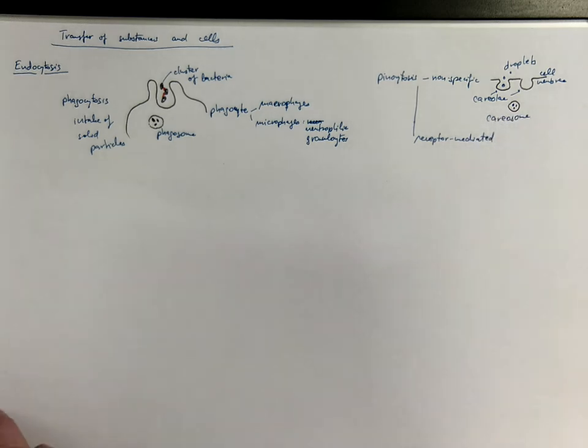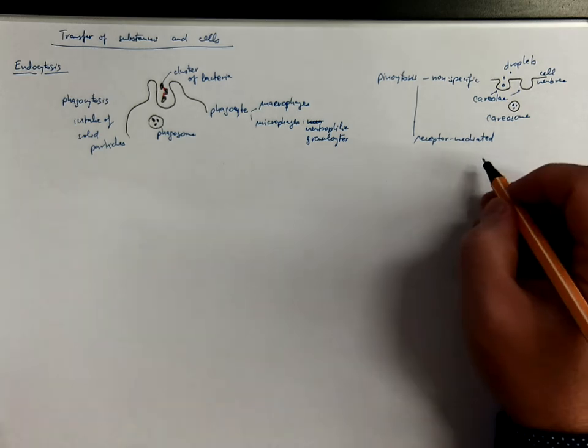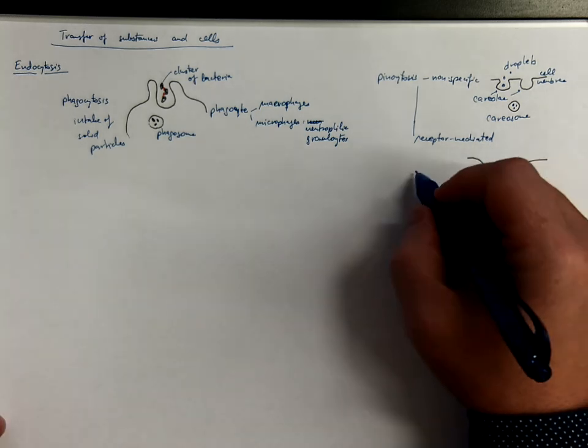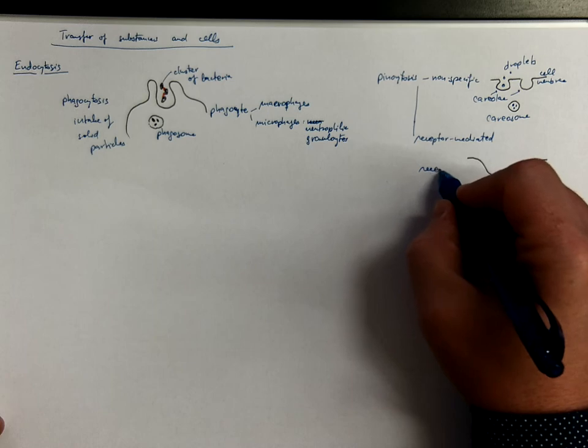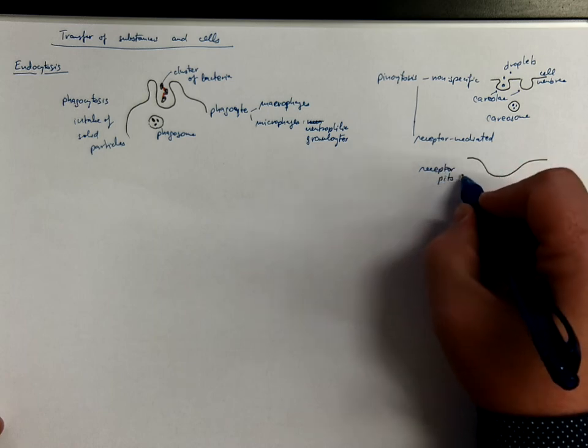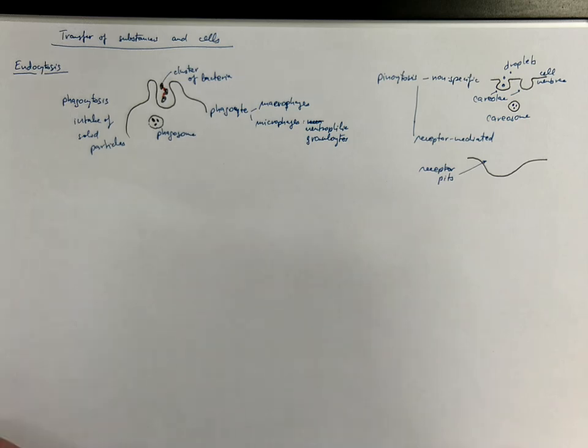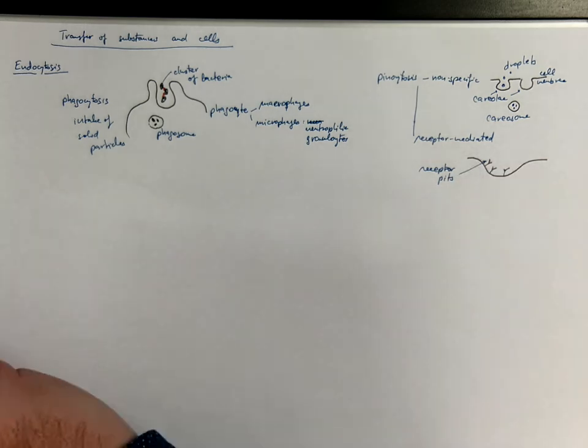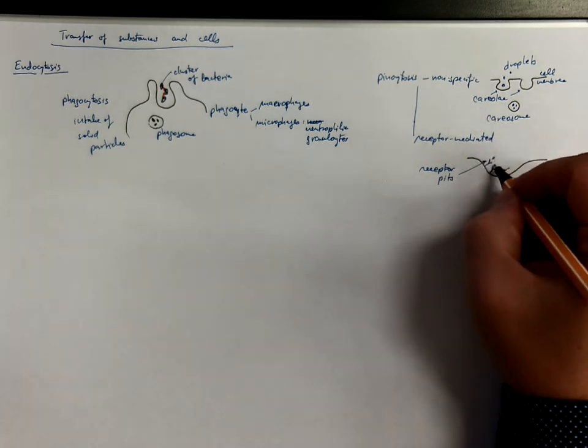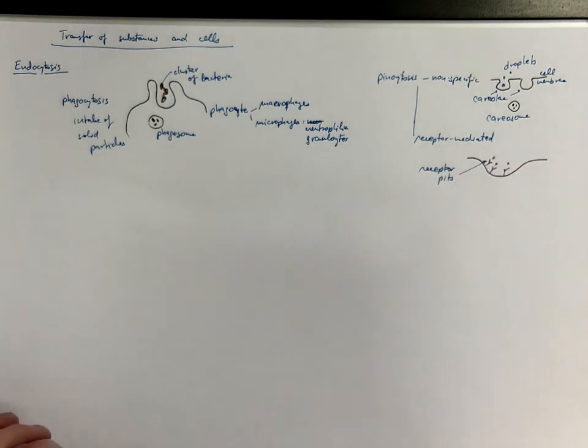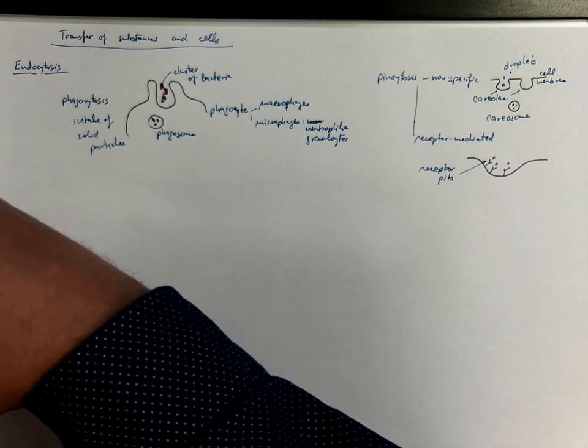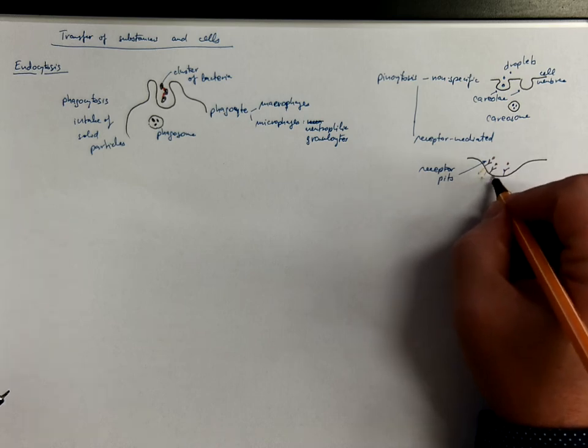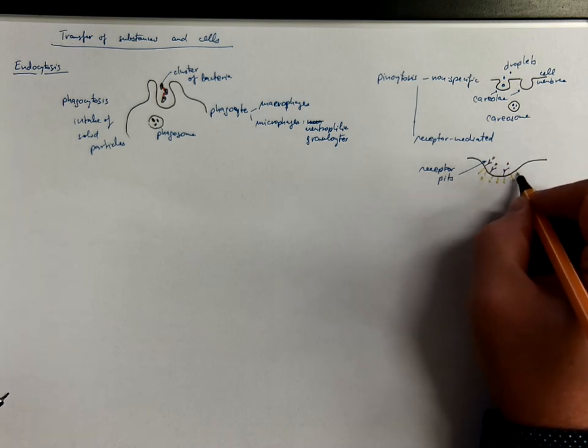Receptor-mediated pinocytosis involves formation of receptor pits. There are specific receptors that recognize some particles in the fluid, in the droplets, and with the help of molecules called clathrins that are from inside the cell and help to organize these pits.